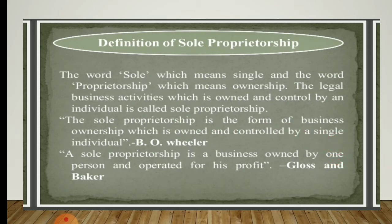In our textbook the definition given by Wheeler states: sole proprietorship is the form of business organization which is owned and controlled by a single individual. He receives all the profits and risks all his property in the success or failure of the enterprise. One more definition by J.L. Hansen: sole trader is a type of business unit where a person is solely responsible for providing the capital — capital means investment — for bearing the risk of enterprise and for the management of business. He has to undertake all the proceedings of the business, reap all the profits, and bear all the losses.